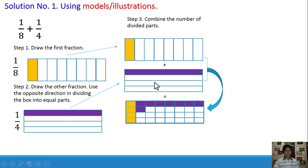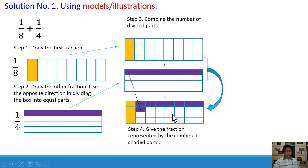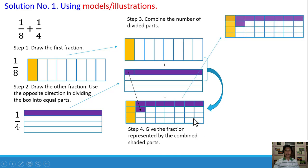As you can see, we have shaded parts. I transferred the shaded part from this portion because it is already shaded using the 1/8. So step number 4 is give the fraction represented by the combined shaded parts. We are going to count the number of shaded parts — there are 12 shaded parts already.